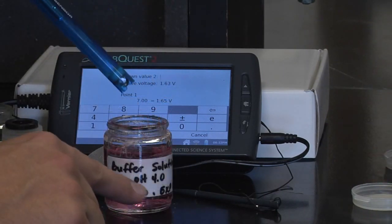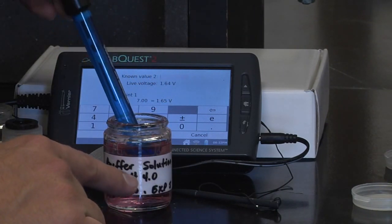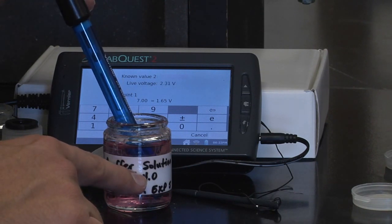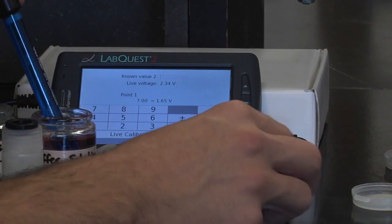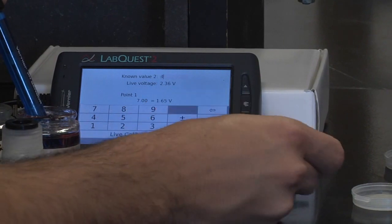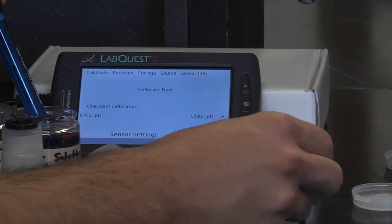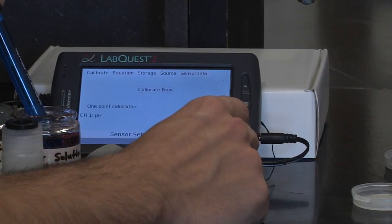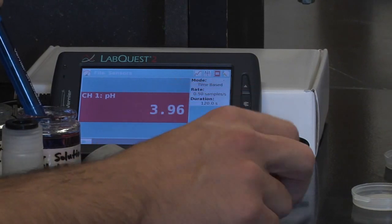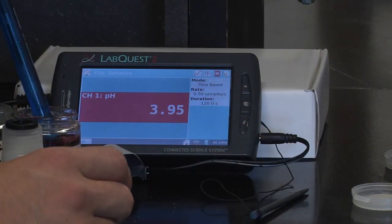and insert it to a new buffer solution. This one has a pH of four. So we will then go ahead and press four and press keep. Our pH probe should now be calibrated and should have a fairly accurate reading of our buffer solution.